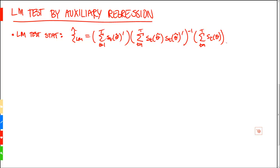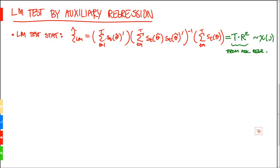So this is the quadratic form for the LM test statistic, and what we want to show in this video is that this test statistic can be easily calculated as T — the sample size — multiplied by R², where this R² is achieved from an auxiliary regression. Keep in mind also that under the null this is chi-square distributed with j degrees of freedom, where j is the number of parameters that we test.